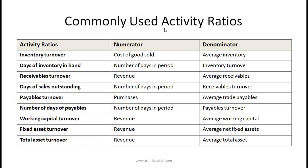One of the most important activity ratios is the inventory turnover ratio. Inventory turnover is cost of goods sold in the numerator divided by average inventory — essentially COGS divided by average inventory. Most of these ratios are mixed ratios, meaning we have a numerator from the income statement and a denominator from the balance sheet. In these turnover ratios, the income statement item — cost of goods sold, revenue, purchases — sits in the numerator, and the balance sheet item sits in the denominator.